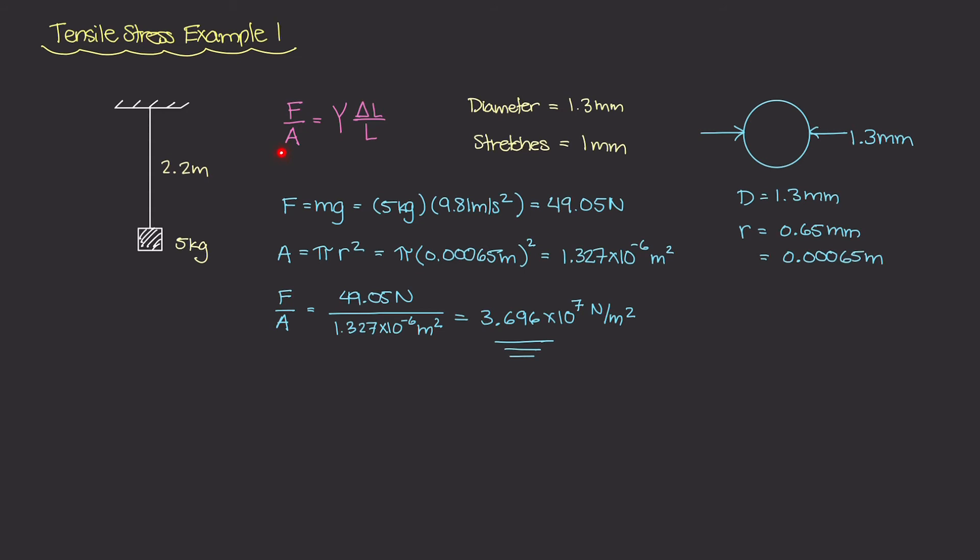So we have this left side of the equation. How about the right side? Well let's look at this term right here, this ΔL over L, which we know to be our strain value.